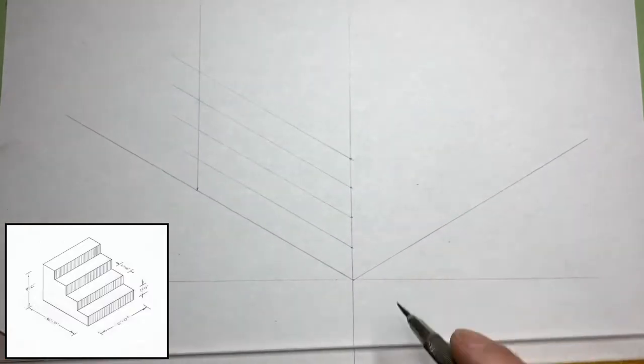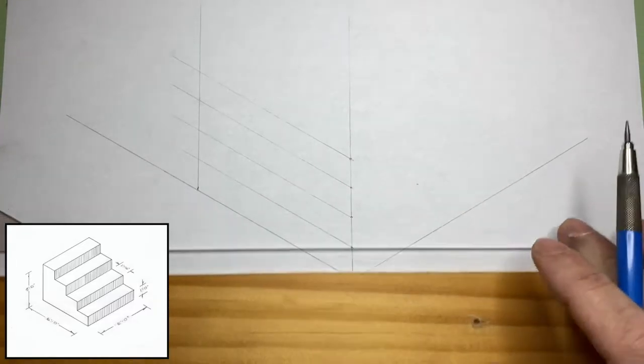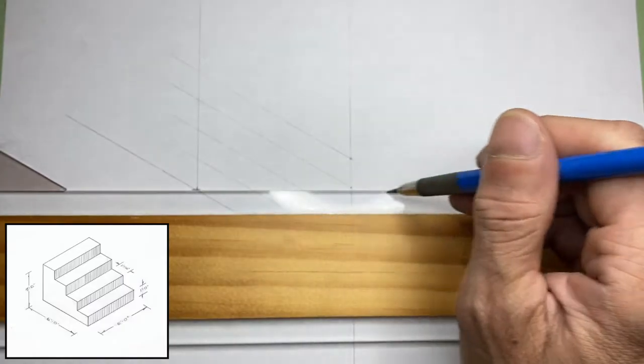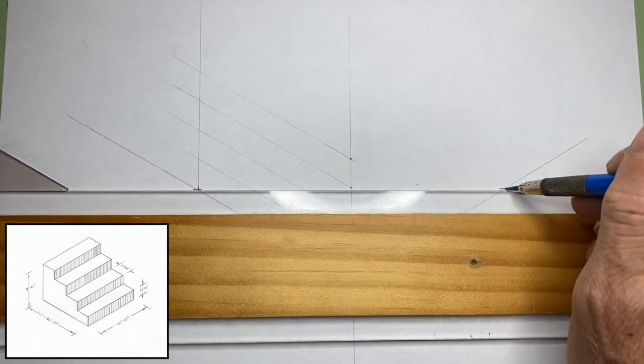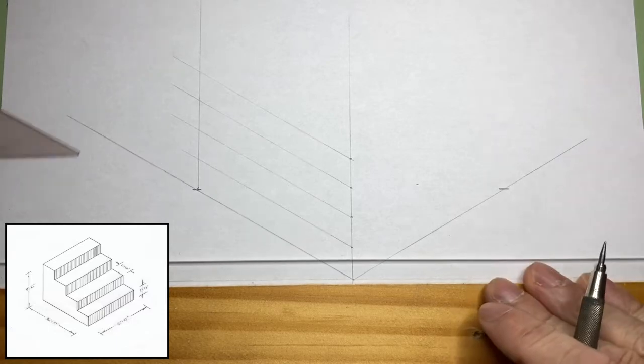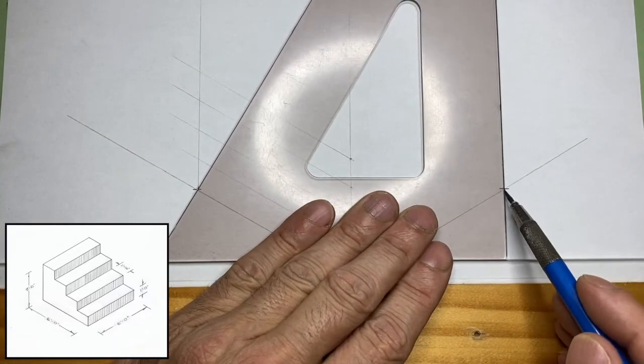Next, we'll determine the width of the staircase. In this case it'll be six feet. A shortcut is to transfer the measurement over from one side using your t-square, putting a dash over to the other. That way you don't have to measure it.